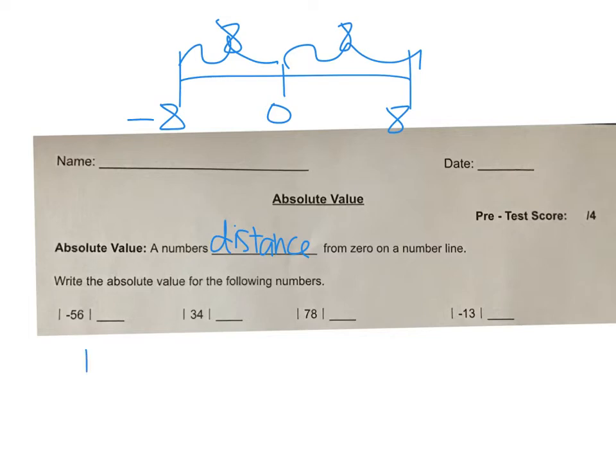So these straight bars that go on either side of the number are called absolute value bars. So for this one, what is the absolute value of negative 56? Well, how far is negative 56 from zero? It is 56.